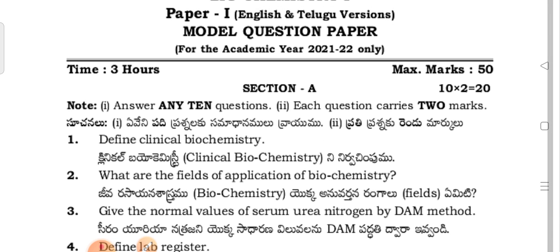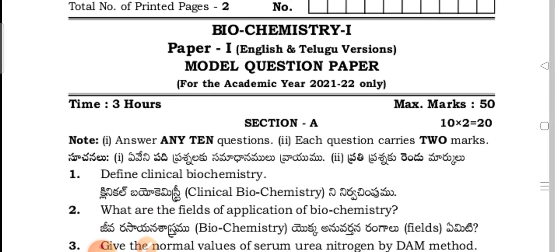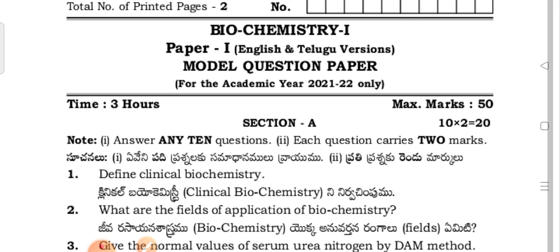Don't worry — this may seem the toughest subject in MLT, but I know very well what you have to study. Regarding the question paper pattern: Section A has no choice — they will give 10 questions and you must attempt all 10. Each question carries 2 marks. Section B has a choice — they will give 8 questions and you attempt any 5. Each question carries 6 marks, so 6 into 5 equals 30. Section A is 20 marks, Section B is 30 marks, giving an overall total of 50 marks. Pass mark is 18.